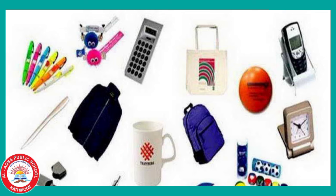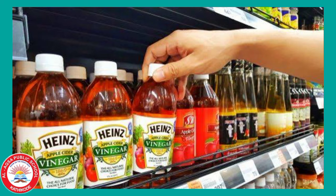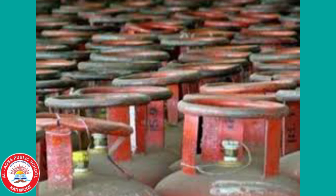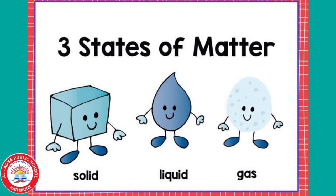We can see that matter around us exists in three different states: solid, liquid and gas. These states of matter arise due to the variation in the characteristics of the particles of matter. Now let us study about the properties of these three states of matter in detail.